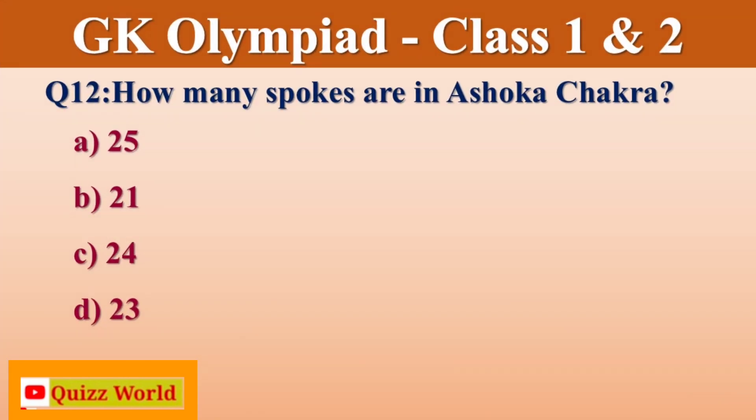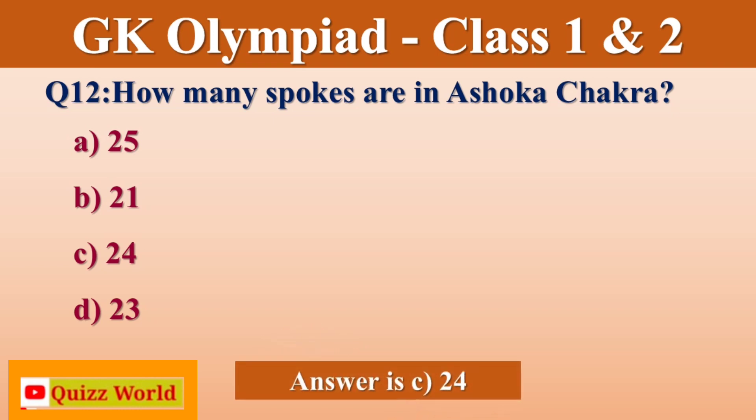How many spokes are in Ashok Chakra? 25, 21, 24, 23. Right answer is 24.